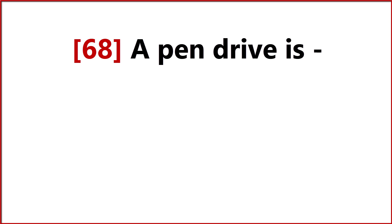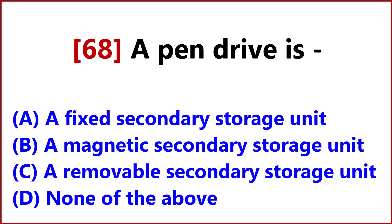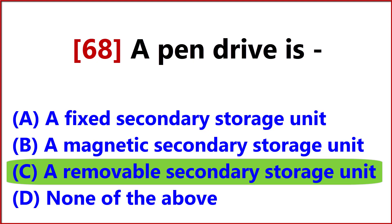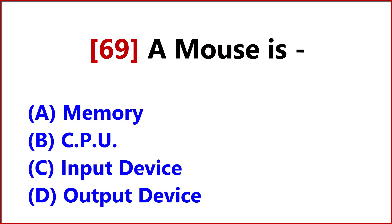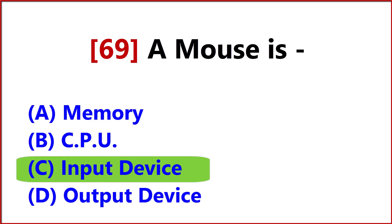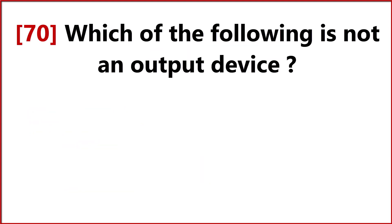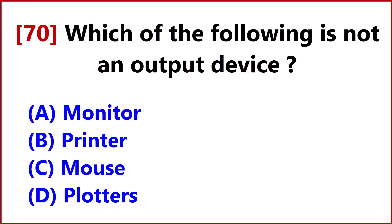A pen drive is Answer, Option C, A removable secondary storage unit. A mouse is Answer, Option C, Input Device. Which of the following is not an output device? Answer, Option C, Mouse.